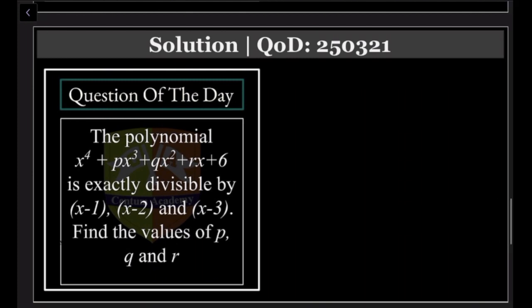Okay guys, so here is the solution for your question of the day from yesterday, 250321. The polynomial x⁴ + px³ + qx² + rx + 6 is exactly divisible by (x-1), (x-2), and (x-3). Find the values of p, q, and r. It will be lengthy, I am not doing it in full detail.